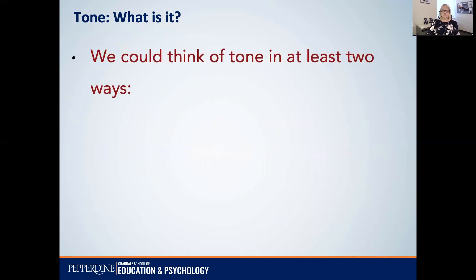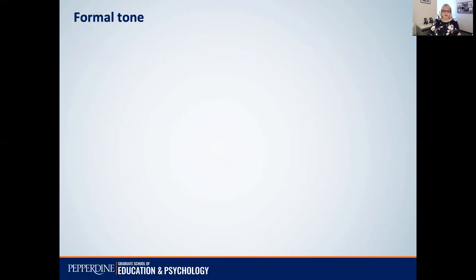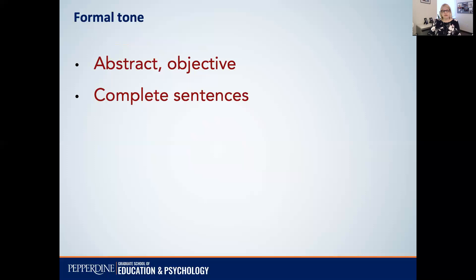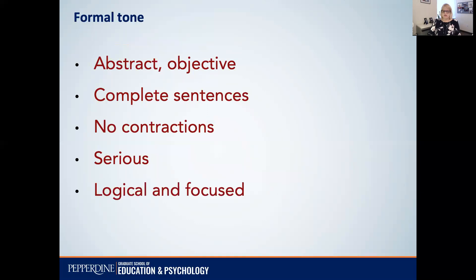We could think of tone in at least two ways: as formal or informal. There are other ways we could also think about it, but let's just talk about these. A formal tone would include abstract, objective language, complete sentences, no contractions, a serious or professional tone, and a logical or focused piece of writing.